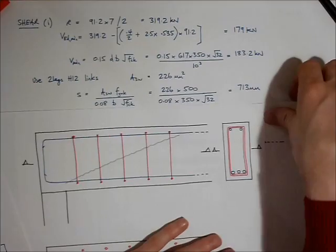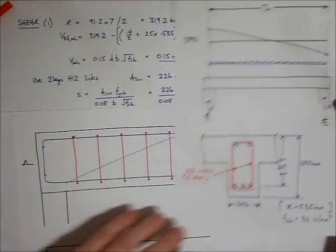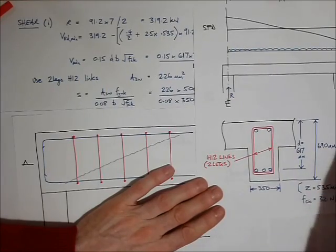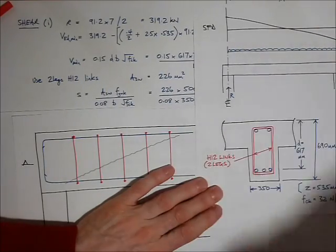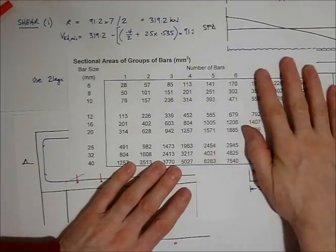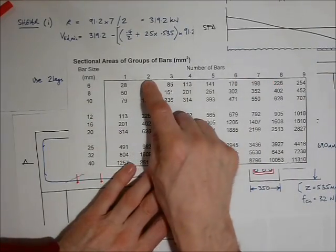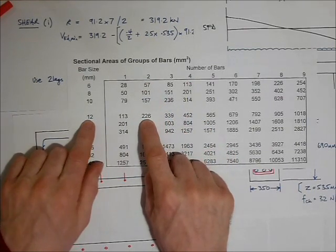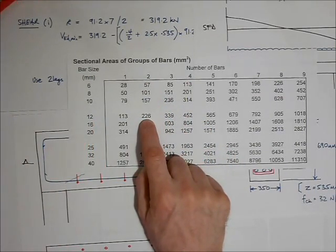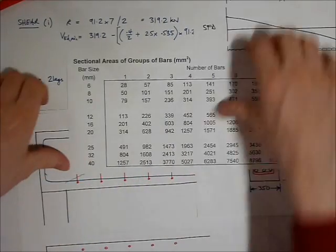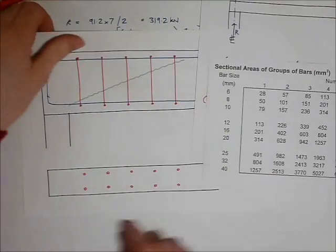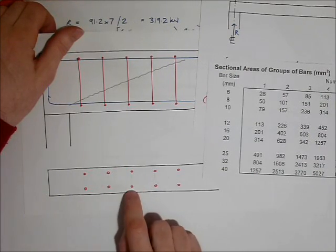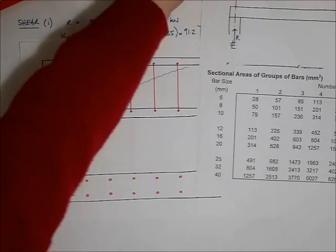Well, I know that I'm going to use two legs of 12 mil diameter links. Here they are, two legs, 12 mil diameter links. And if I use my section area tables, two legs, 12 mil diameter links, that gives me a cross sectional area of a link as being 226mm². So the area of this plus that is 226mm². The area of that plus that, 226mm². Very good.